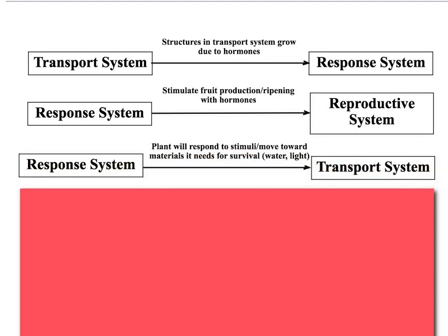The next interaction is the response system and the transport system. The plant is able to respond to stimuli or even move toward materials it needs for survival, doing different tropisms depending on what material or need it has. If it's water or light, remember things like hydrotropism and phototropism for different processes that have to happen in the plant, like photosynthesis. Within the transport system, we're going to use those things we take up because of different tropisms in order to do things like photosynthesis.